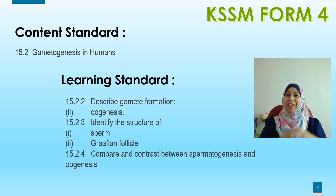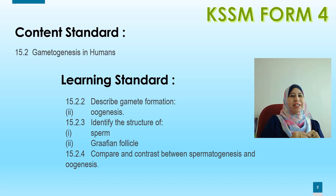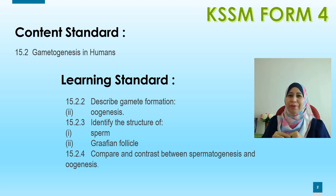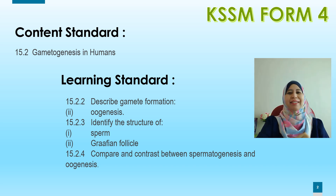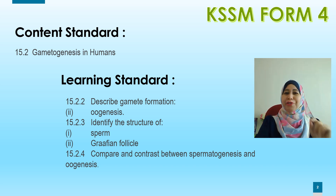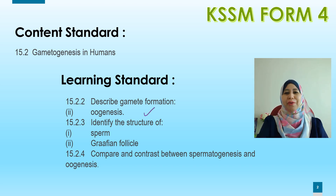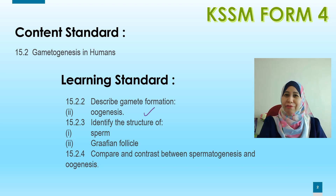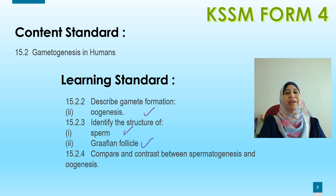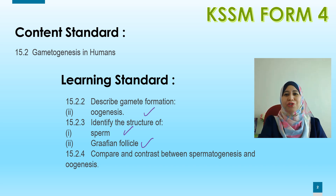The content standard for KSSM Form 4 is on 15.2 gametogenesis in humans. The learning standards are 15.2.2, describe the formation of oogenesis; 15.2.3, identify the structure of sperm and graafian follicle; 15.2.4, compare and contrast spermatogenesis and oogenesis.